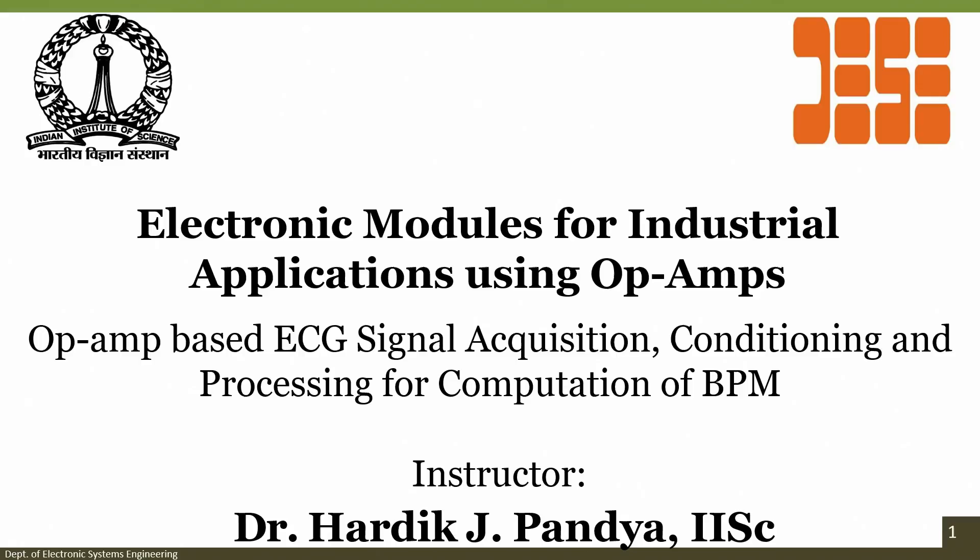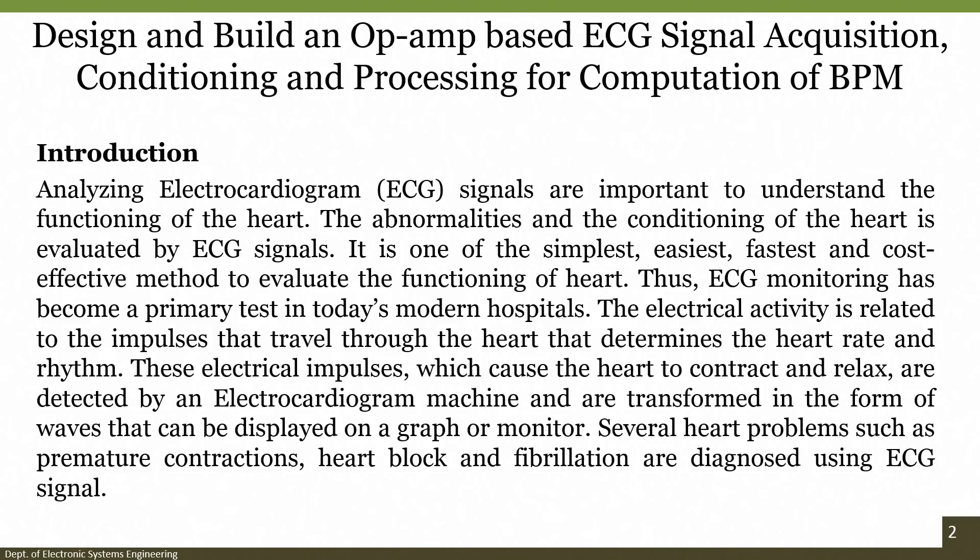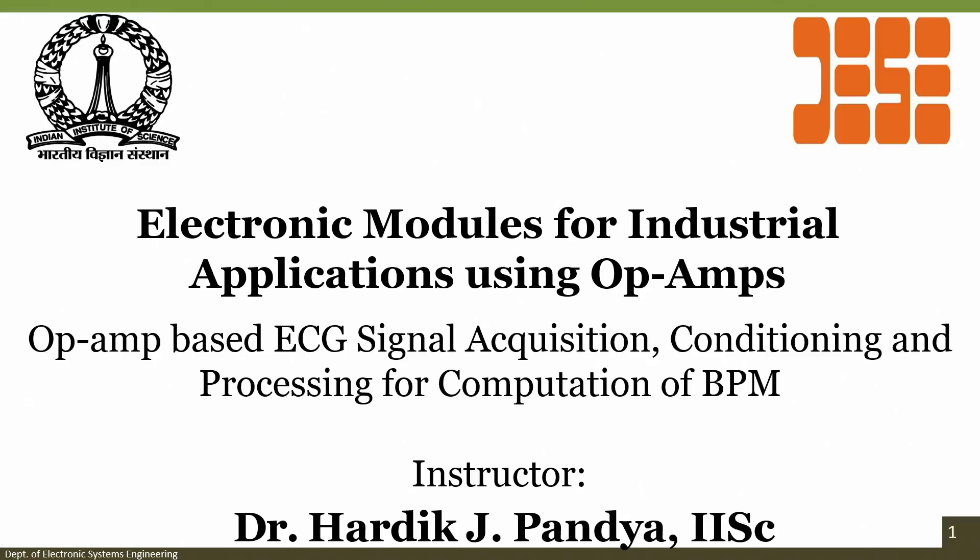When we are talking about functioning of the heart we are also talking about how many beats per minute the heart is pumping. To develop such a module we need to understand how we can use what we have learnt in the previous module — different amplifiers, different filters, half-wave rectifier and triggering circuit — so as to integrate all those components together and form a signal conditioning circuit for the ECG. Today we are going to focus on op-amp based ECG signal acquisition, conditioning and processing for computation of beats per minute.